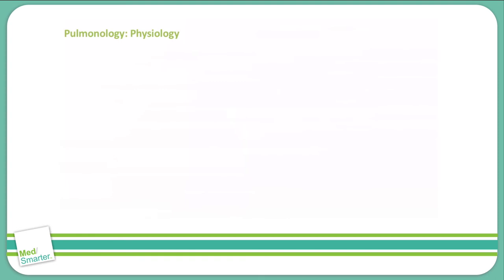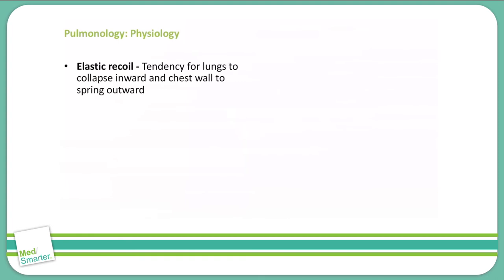Next, let's talk about elastic recoil. Elastic recoil is the tendency for lungs to collapse inward and the chest wall to spring outward. The chest wall is used to inhale air, and then the elastic recoil of the lung is used to exhale air.